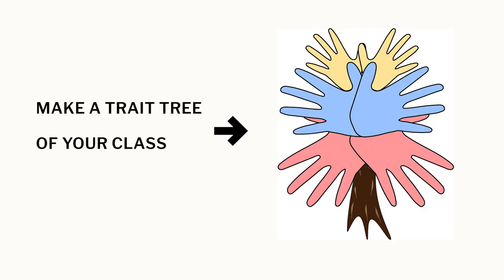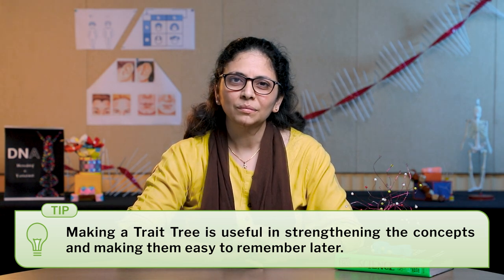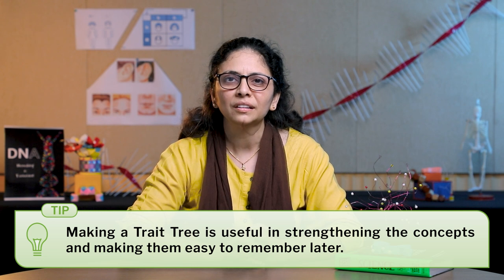Additionally, students were encouraged to draw a tree trunk on a large chart paper or open wall and paste their handprints along the trunk and branches to form the leaves of that tree. Making this class trait tree has its own advantages. When children write the acquired and inherited traits on the fingers of their handprints, they can get confused, and after certain realization, they correct it — and that strengthens the concept better. Once the tree is made, it always remains in their class, and they can refer to it even after the topic is over, making it easy to remember what they have learnt about heredity and variation.